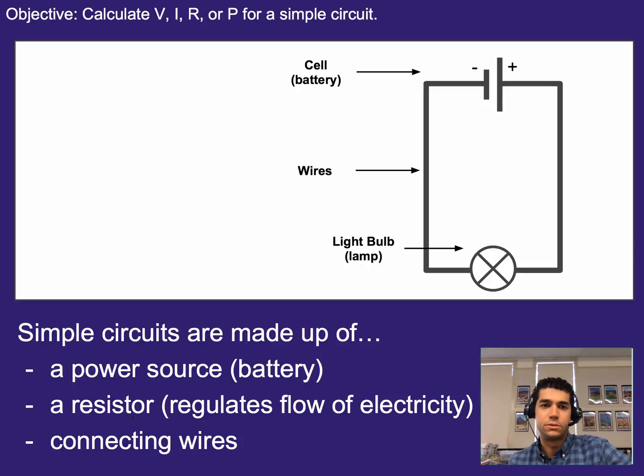Alright, so simple circuits are made up of three things, or three major pieces. A power source, which is often a battery, a resistor or something that is regulating the flow of electricity, and any connecting wires. So here, for example, we have a battery, we have the connecting wires, and then the resistor is actually the light bulb in this case.